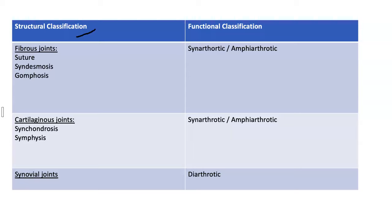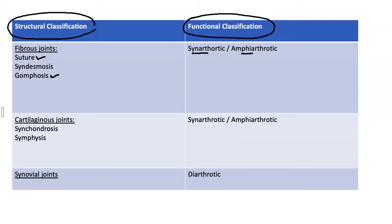Let's put the structural and functional classifications together. Fibrous joints are either immovable or slightly movable. The suture and the gomphosis are synarthrotic. Depending on fiber length, a syndesmosis ligament may be amphiarthrotic. Cartilaginous joints are also immovable to slightly movable — a synchondrosis is synarthrotic, while a symphysis like the intervertebral discs is amphiarthrotic. Synovial joints, because they all have a fluid-filled cavity, are all freely movable diarthrotic joints.